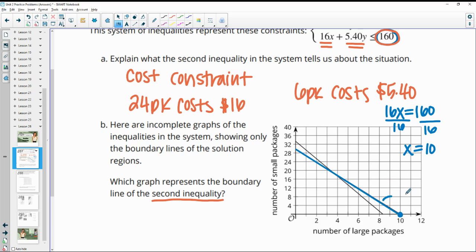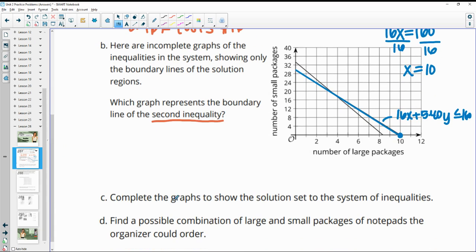So this one is 16X plus 5.40Y is less than or equal to 160. So that's that second equation. And then it says complete the graphs to show the solution set. So if we need to be less than that budget, then we're going to be shading underneath this blue line.